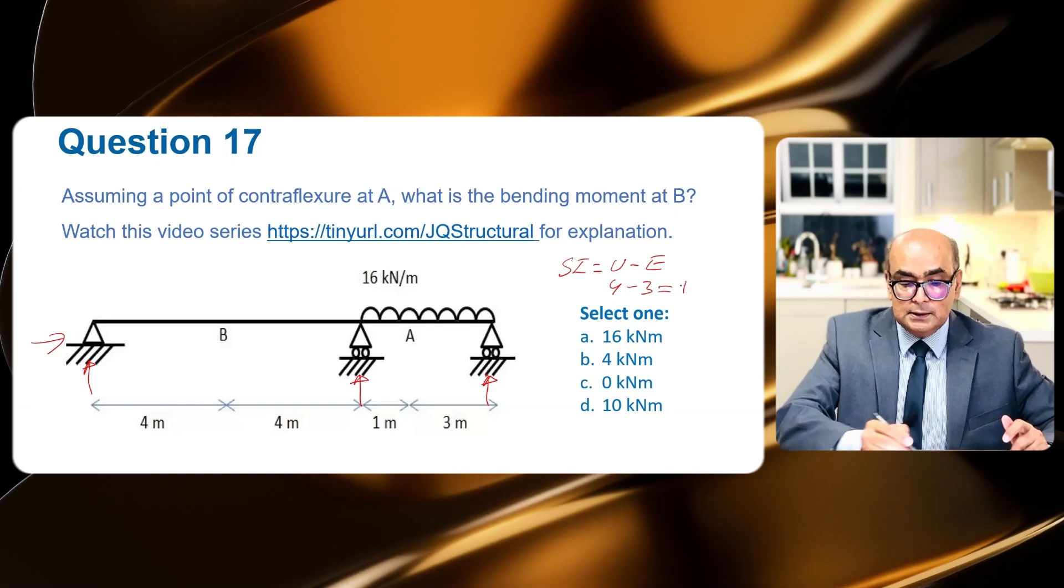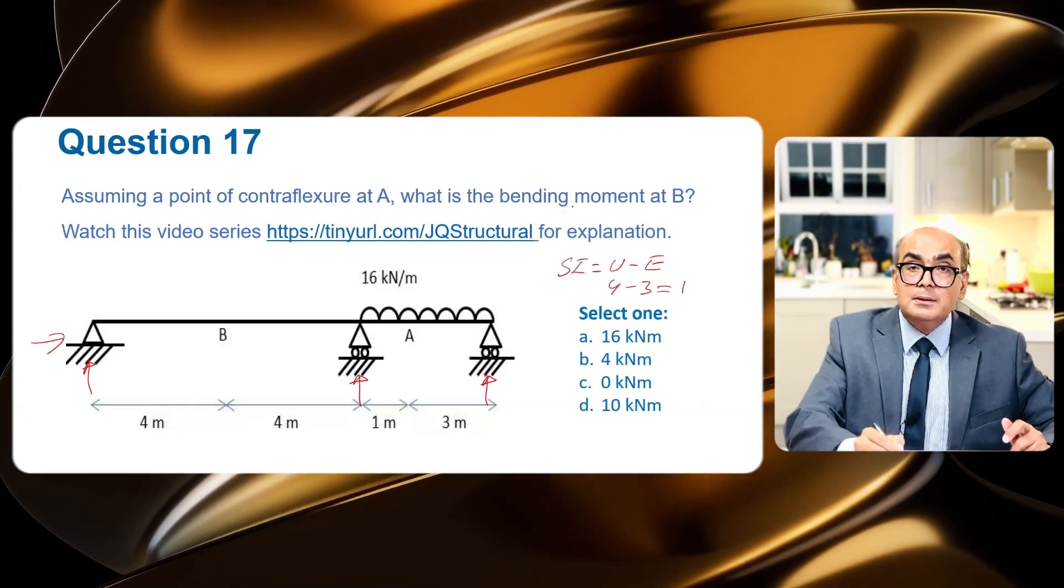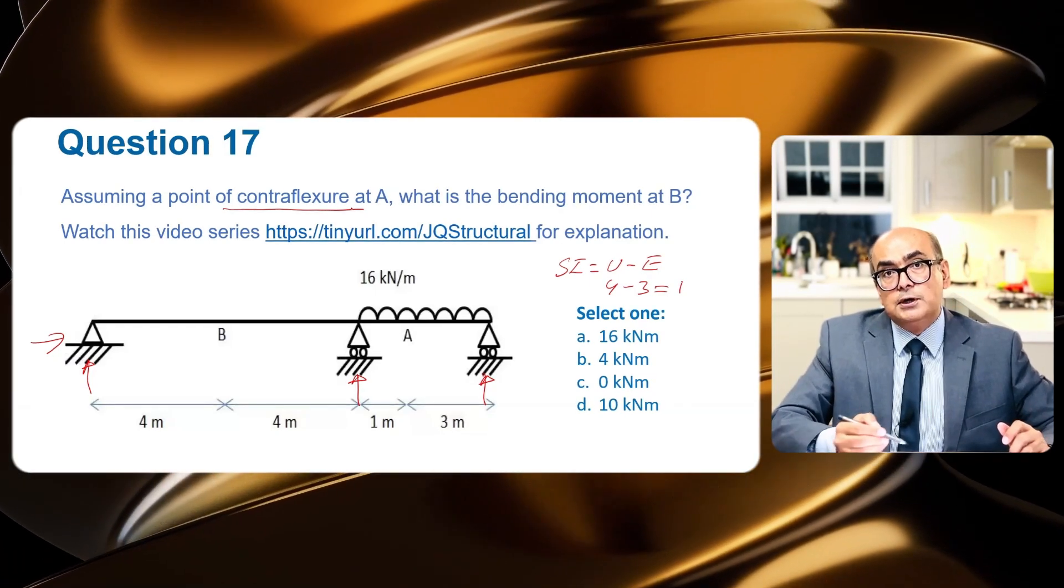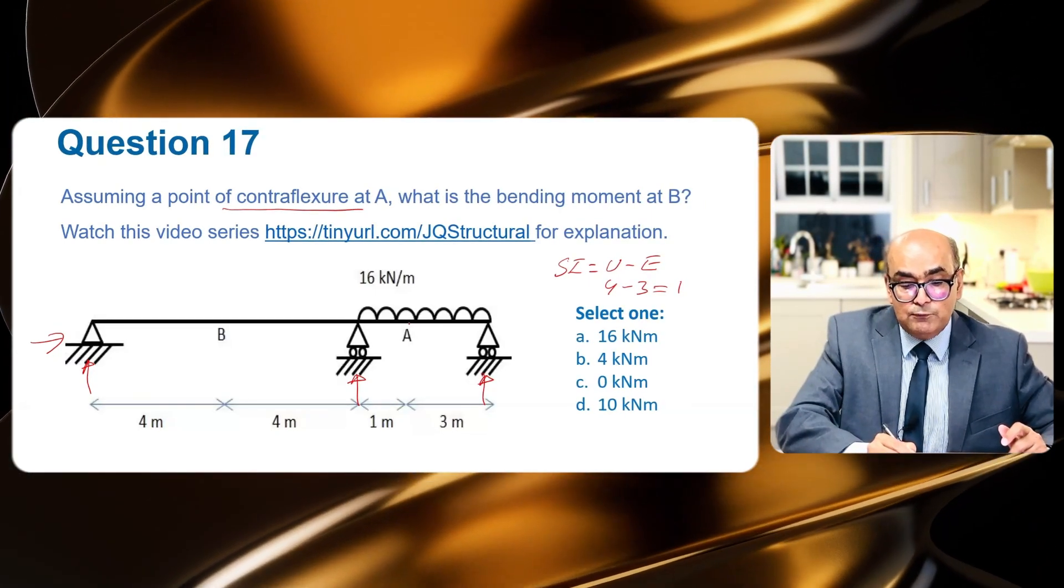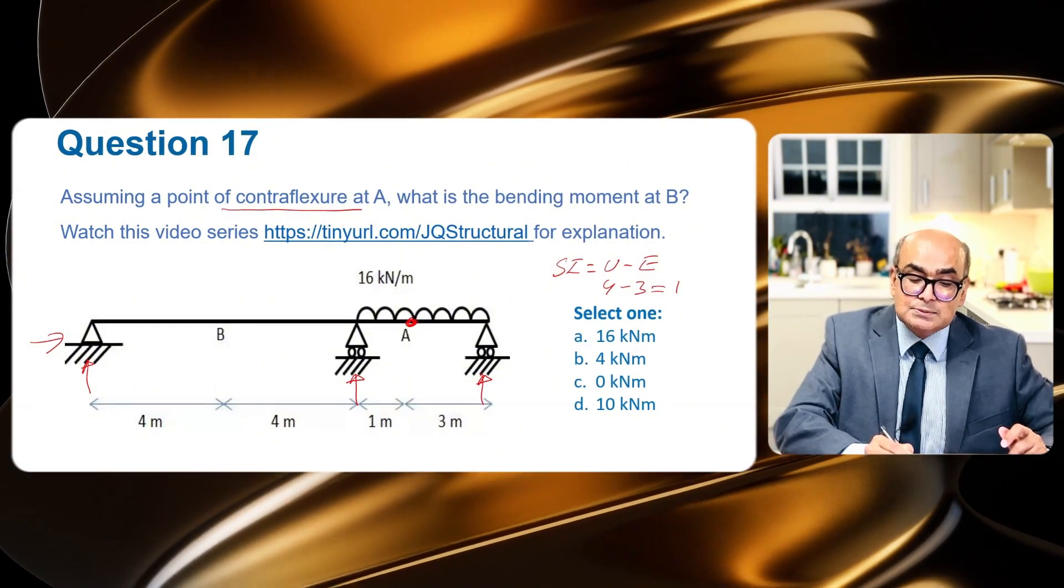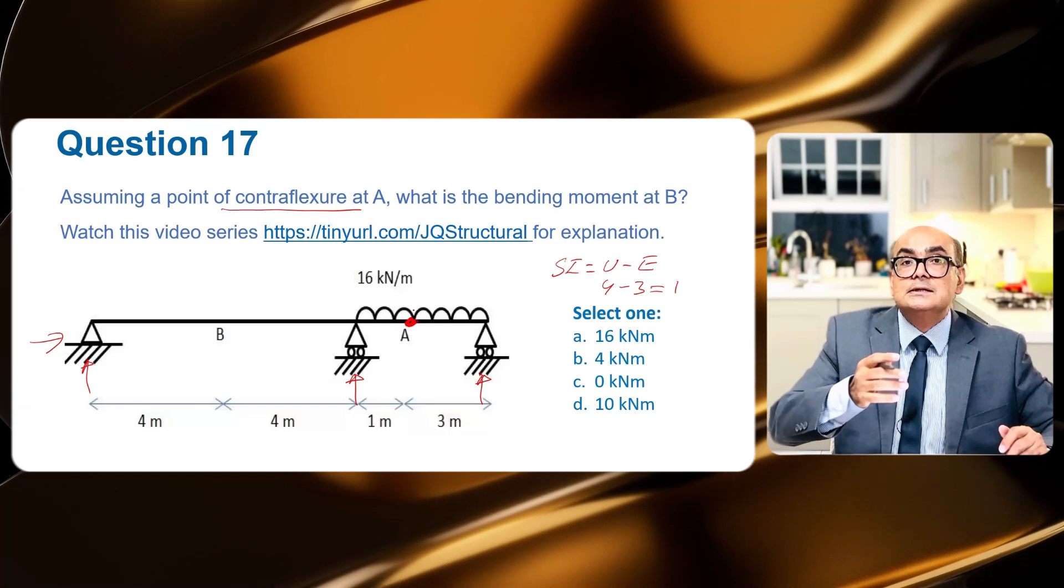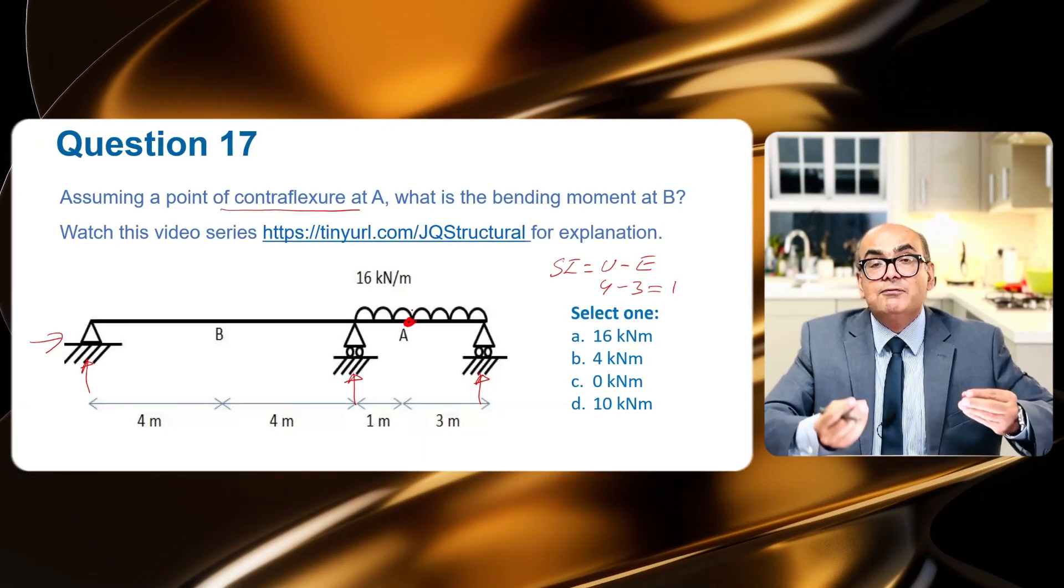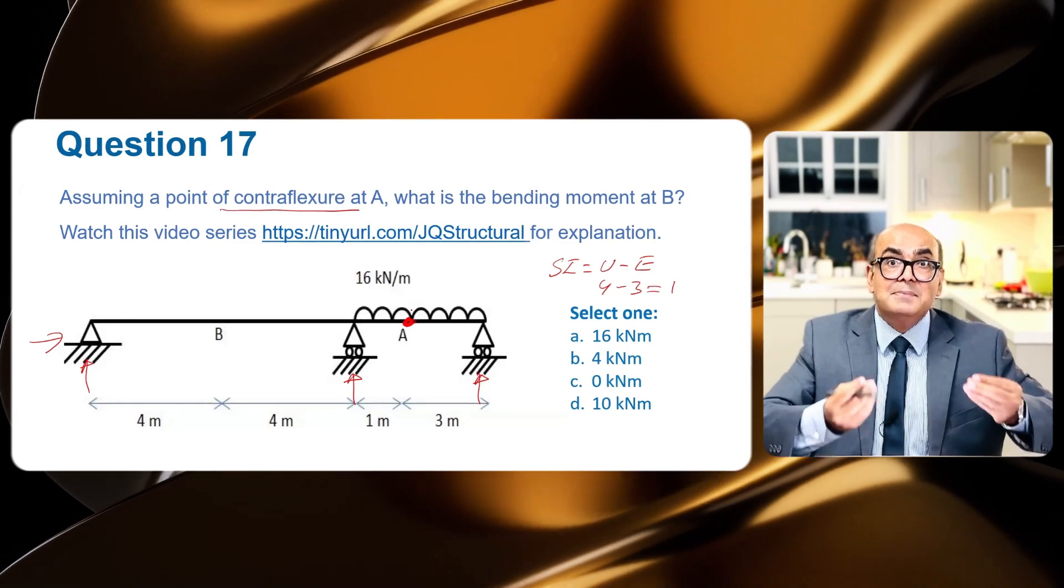This is one, but because we are assuming that there is a point of contraflexure, now what is point of contraflexure? The point of contraflexure is a point where bending moment is zero. So we can consider this point of contraflexure as an internal pin or a hinge.